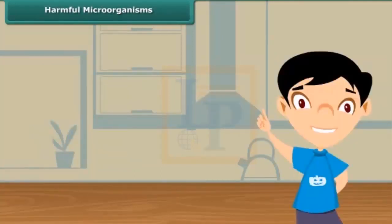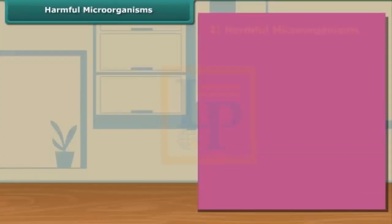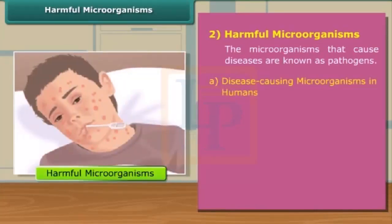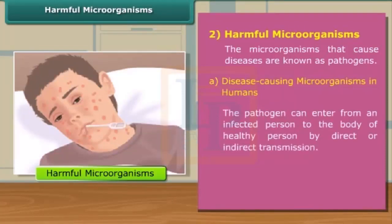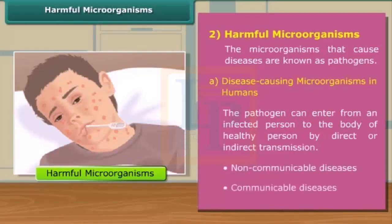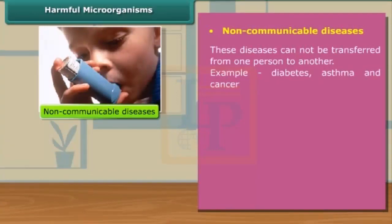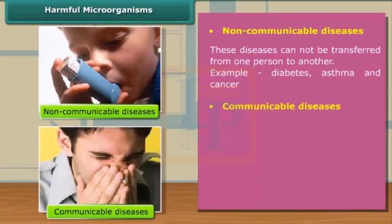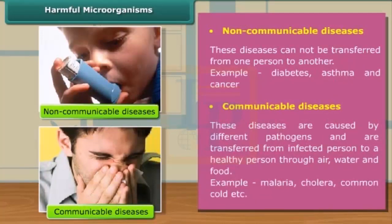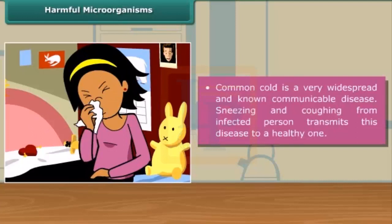After discussing about helpful and friendly microorganisms, let's learn about harmful microorganisms. We will start with microorganisms that cause diseases in humans and animals. The microorganisms that cause diseases are known as pathogens. We can classify diseases into two categories: non-communicable and non-infectious diseases, and communicable or infectious diseases. Non-communicable diseases cannot be transferred from one person to another, while communicable diseases are transferred from an infected person to a healthy person by means of air, water, food, etc. Common cold is a very common example of a communicable disease.